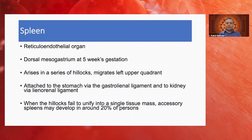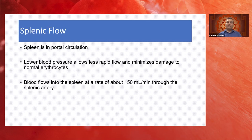Accessory spleens have clinical ramifications — for example, in a patient with ITP who undergoes splenectomy, recurrence of ITP can occur because of an accessory spleen being present. Accessory spleens are present in about 20% of patients and their sizes may be variable. The spleen is part of the portal circulation, and it is presumed that because of the lower blood pressures in the portal system, it allows less rapid flow through the spleen, minimizing damage to normal erythrocytes. Blood flows into the spleen at 150 ml per minute through the splenic artery.